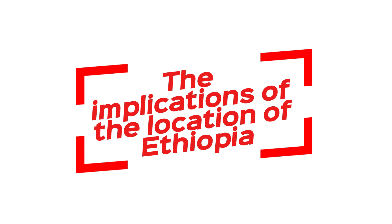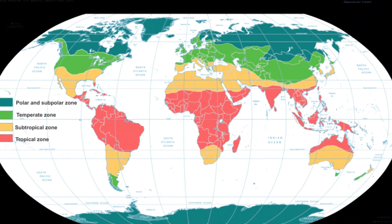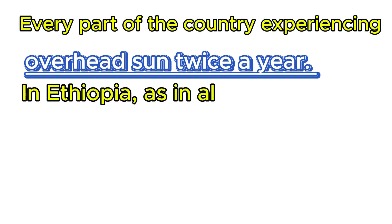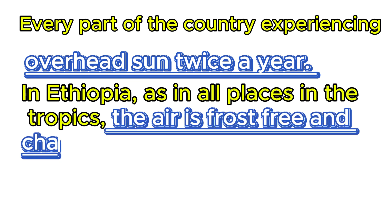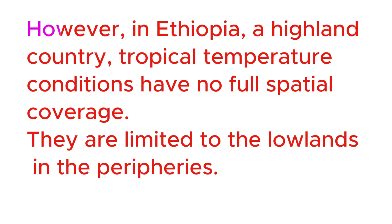Let's take a close look at the implications of the location of Ethiopia. First, climate. The fact that Ethiopia is located between 3 degrees north and 15 degrees north — between the equator and the Tropic of Cancer — implies that the country has a tropical climate. Its proximity to the equator, a zone of maximum insolation, results in every part of the country experiencing overhead sun twice a year. As in all places in the tropics, the air is frost-free and changes in solar angles are small, making for intense solar radiation. However, in Ethiopia, a highland country, tropical temperature conditions do not have full spatial coverage — they are limited to the lowlands in the peripheries.